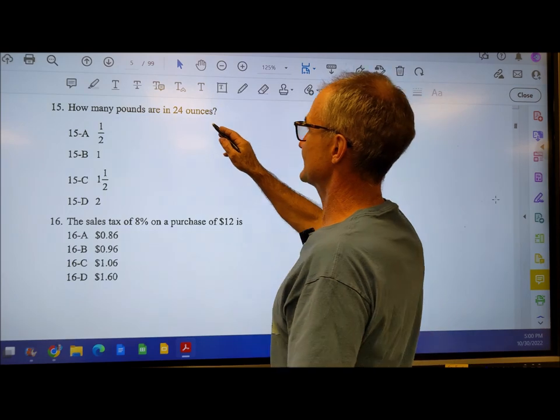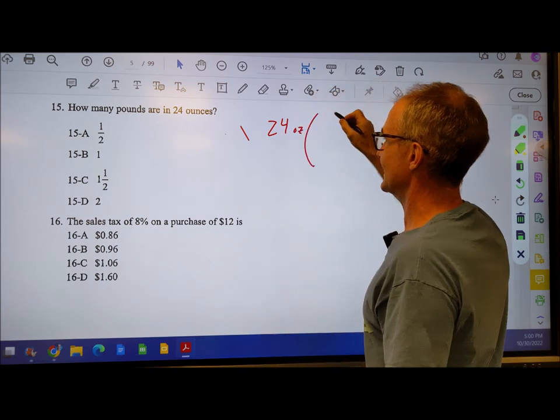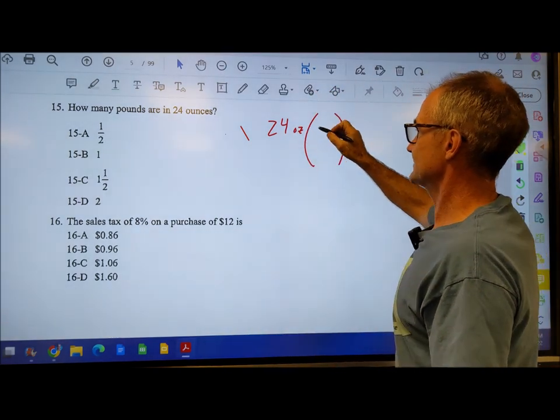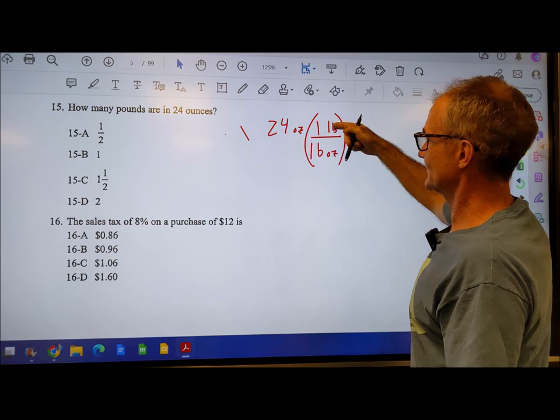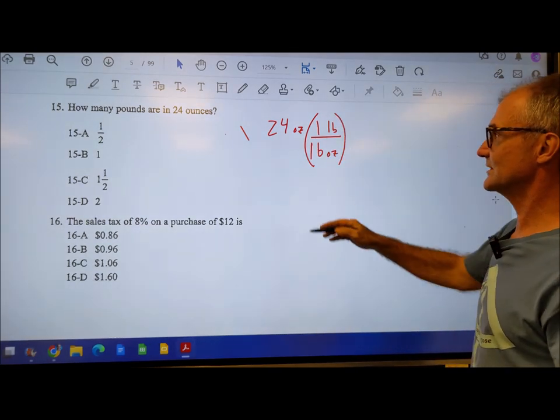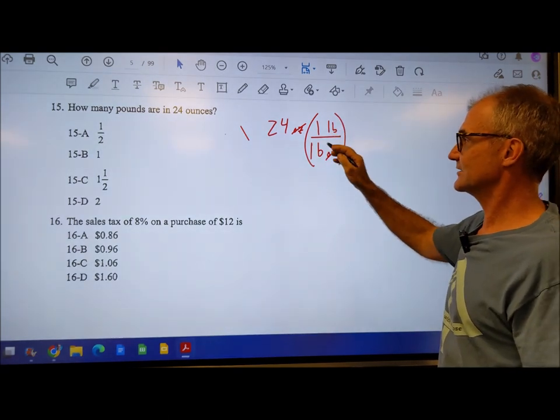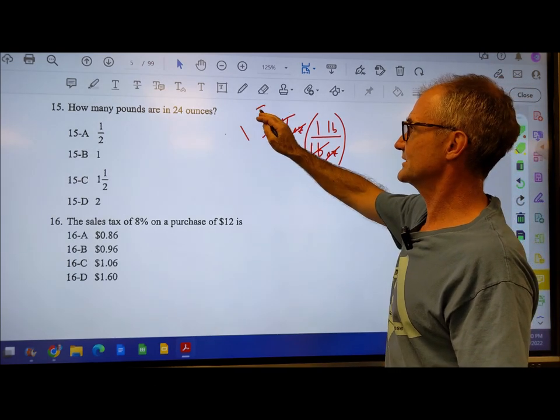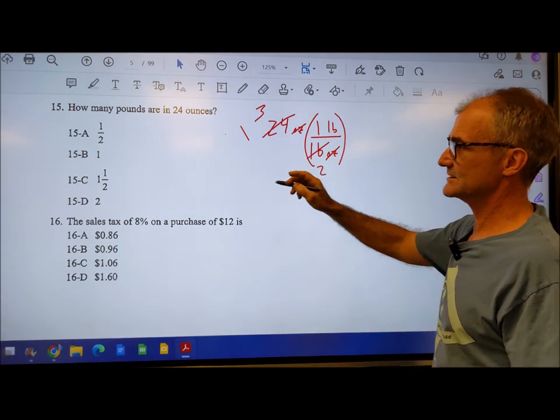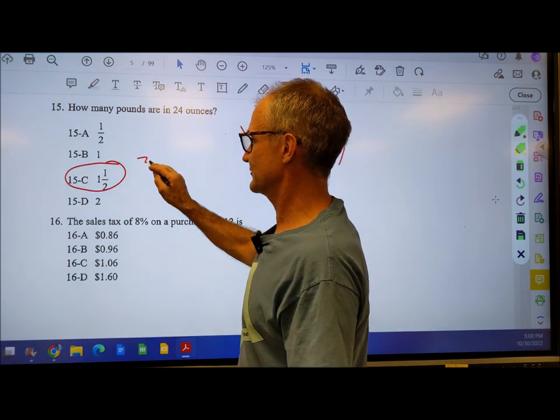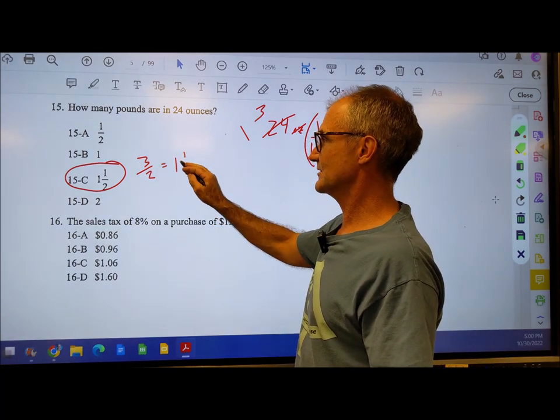Number 15, how many pounds are in 24 ounces? I'm going to take 24 ounces and multiply by a factor of one to get pounds. There are 16 ounces in one pound. One pound and 16 ounces is the same, so I'm multiplying by a factor of one. Ounces cancel, giving me pounds. Eight goes into here twice, eight goes into here three times, gives me three over two. Three over two is one and a half.